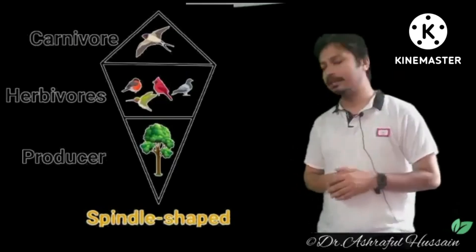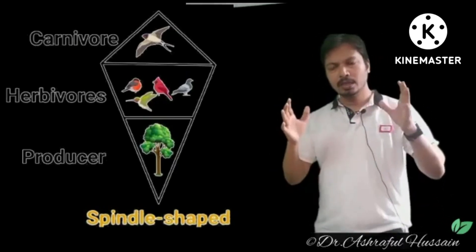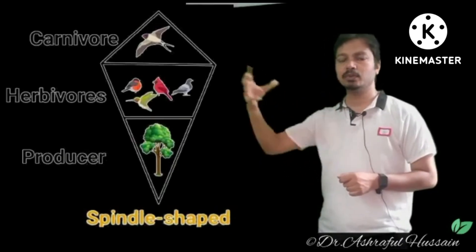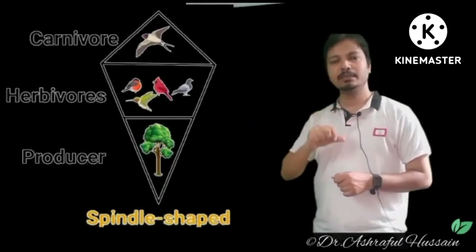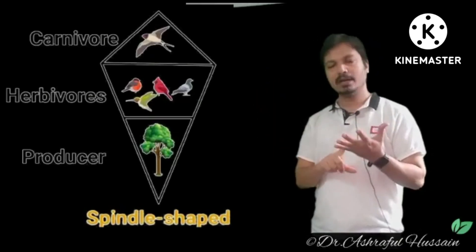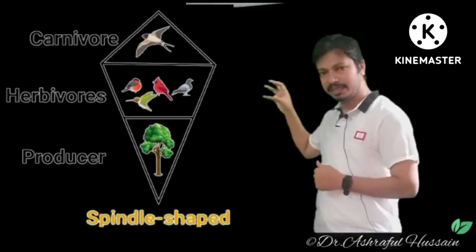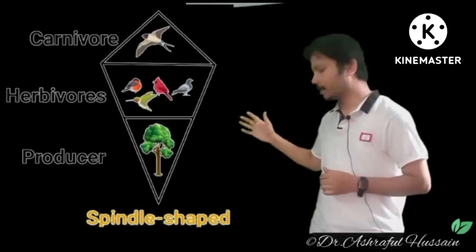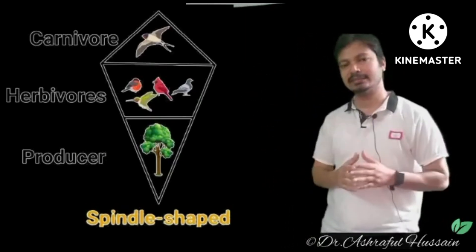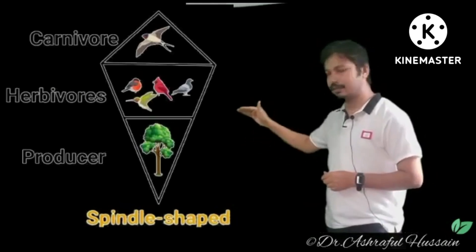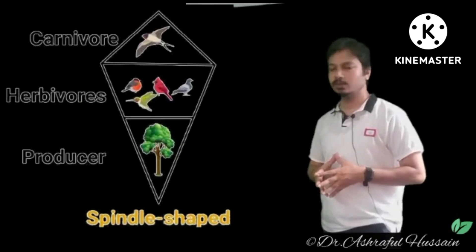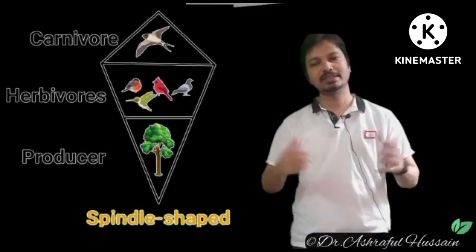Another concept is the spindle pyramid. In this type, consider a tree with many birds, and those fruit-eating birds can be eaten by predators like hawks, falcons, and eagles. In this case, the pyramid of numbers is spindle-shaped. This concludes the topic of the pyramid of numbers.